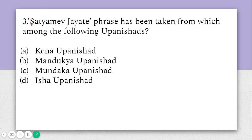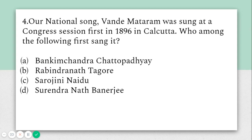The third question was asked in UPSC a few years ago. It says: 'Satyameva Jayate' has been taken from which of the following Upanishads? Option A: Kena Upanishad, B: Mandukya Upanishad, C: Mundaka Upanishad, D: Isha Upanishad. Most people confuse Mandukya and Mundaka Upanishad. The correct answer is the Mundaka Upanishad, not the Mandukya Upanishad.